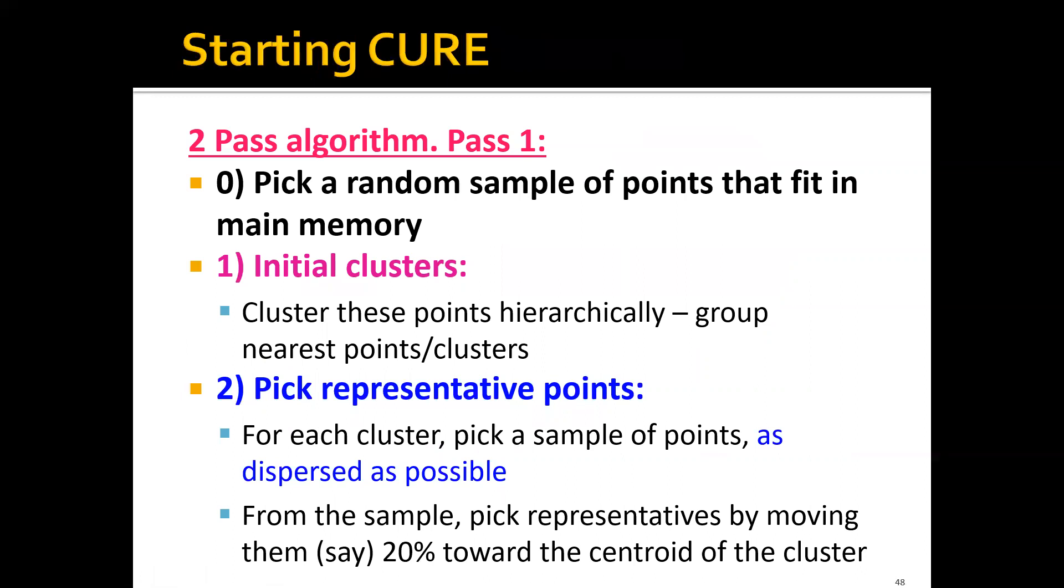So how does the CURE algorithm work? It is actually a very simple two-pass algorithm. In the first pass, we pick a random sample of points that fit in main memory. Then we find some initial clusters. For example, we cluster these points hierarchically using the agglomerative hierarchical clustering algorithm we mentioned before, and group the nearest points and clusters iteratively.